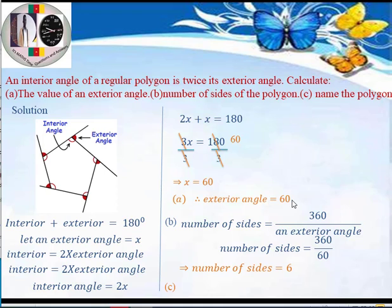To name the polygon, we simply give the name for a six-sided polygon. A polygon with 3 sides is a triangle, 4 sides a quadrilateral, 5 sides a pentagon, 6 sides a hexagon, 7 sides a septagon, 8 sides an octagon, 9 sides a nonagon, and 10 sides a decagon. Since this polygon has 6 sides, we call it a hexagon. That's how we handle questions on regular polygons.